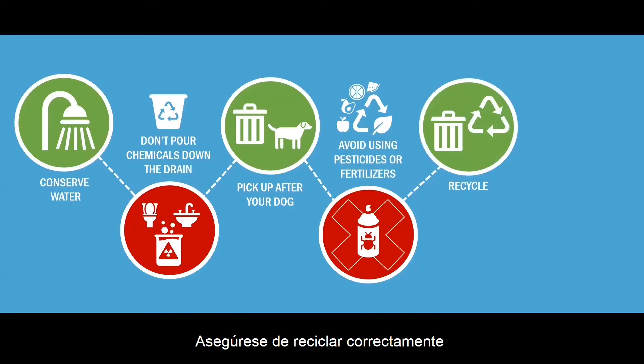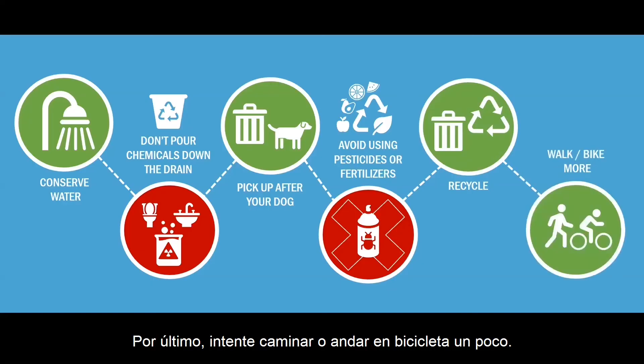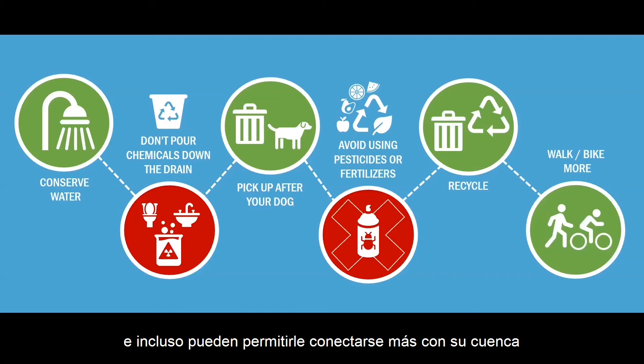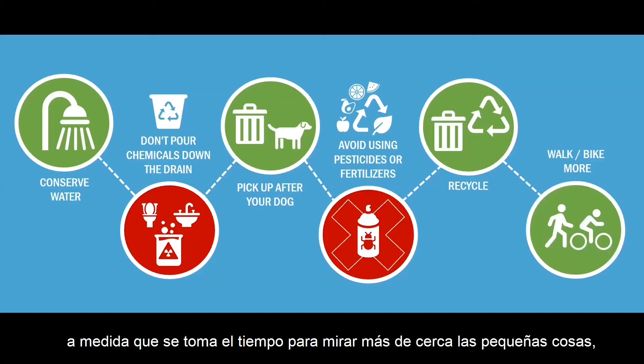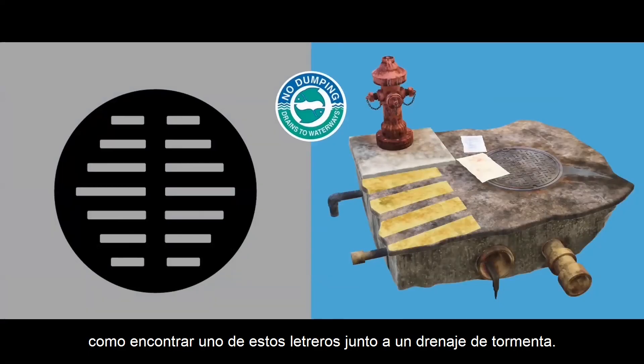Number five, make sure to recycle correctly by disposing your trash in the places where it actually belongs. Lastly, try walking or biking a little more. These are some of the most sustainable ways of transportation and can even allow you to connect more with your watershed as you take the time to look closer at the little things, such as finding one of these marks next to a storm drain.